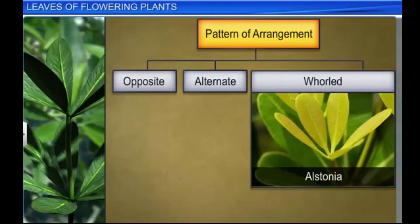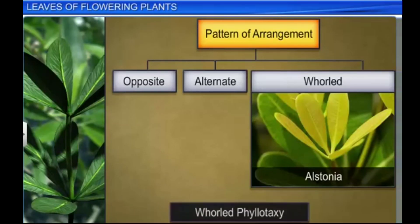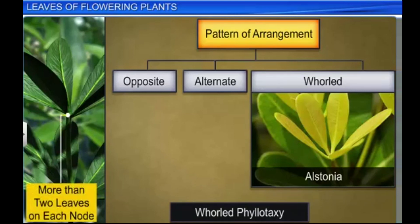In whorled phyllotaxy, two or more leaves are present on each node. Whorled phyllotaxy is seen in Alstonia.